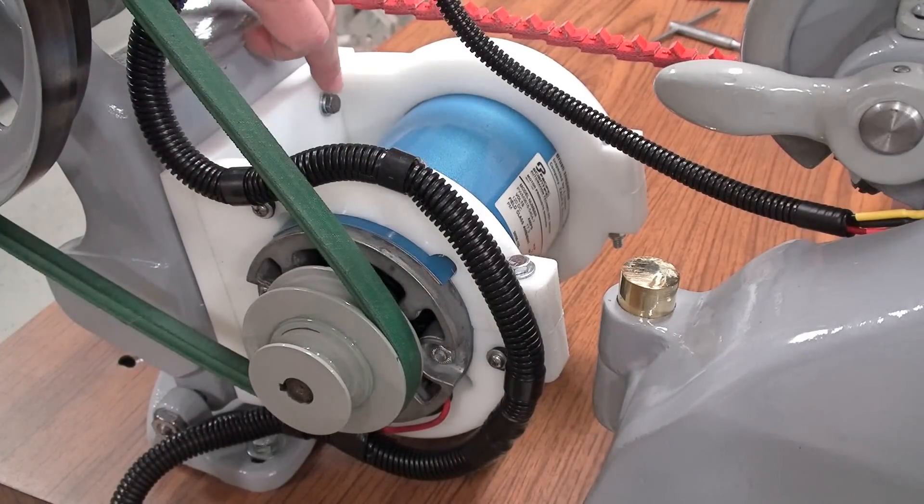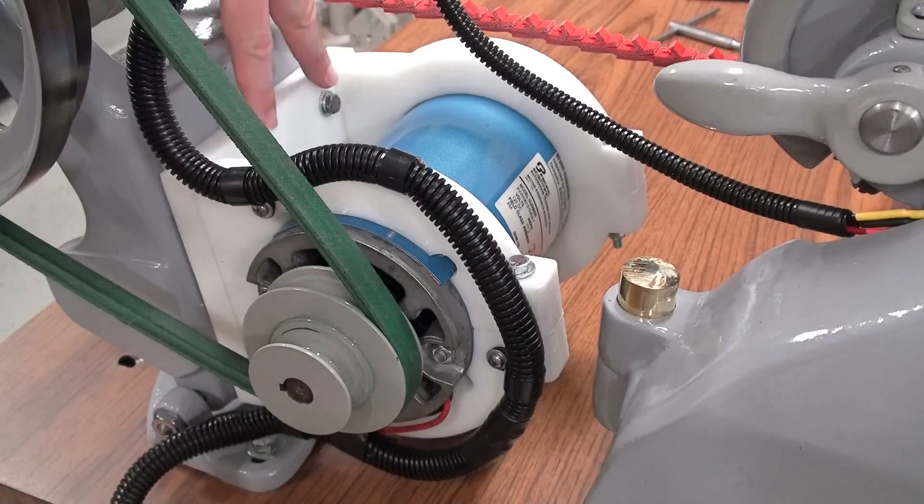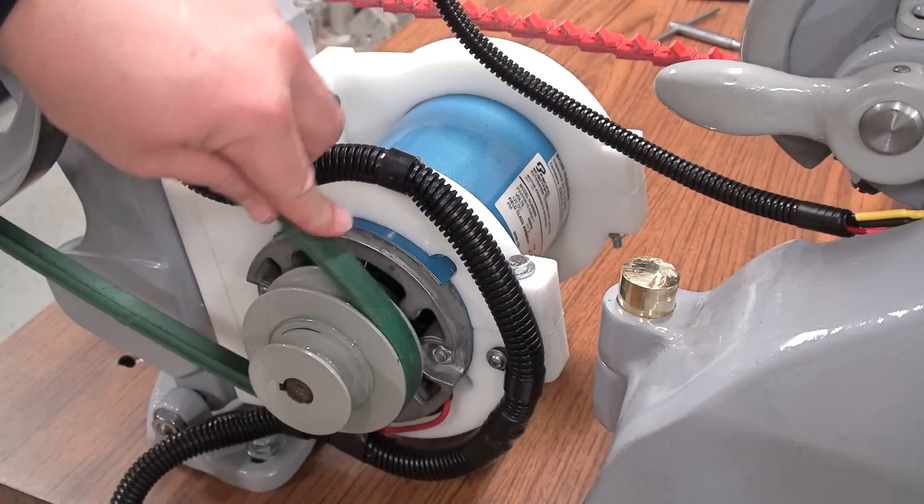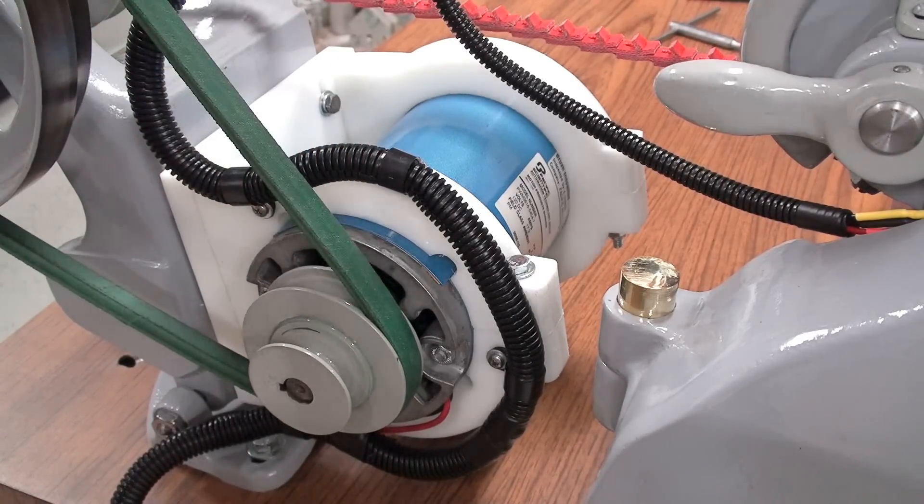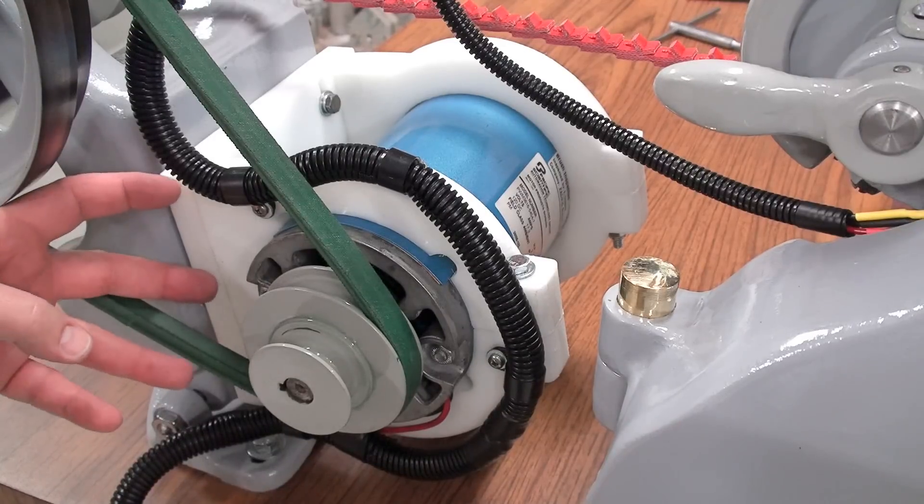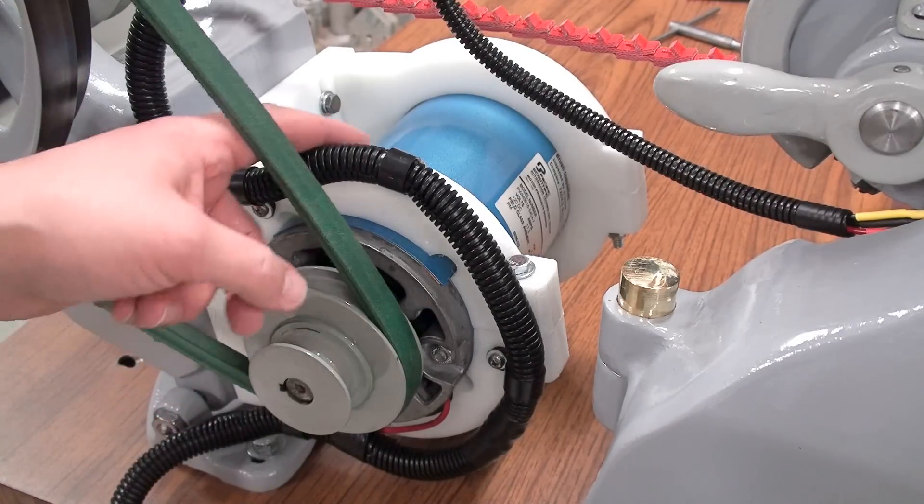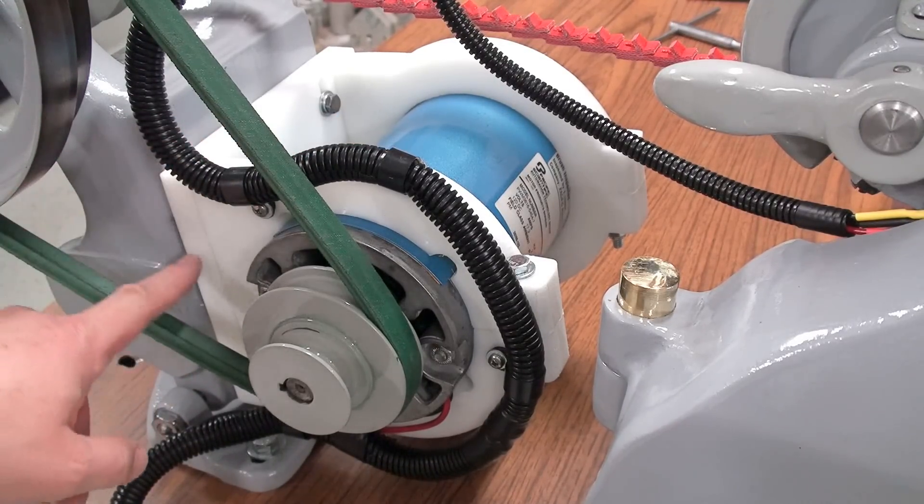I've got elongated holes back along here so that I can adjust the motor height according to how much tension I want for the belt. Then there are a couple bolts that come in here that connect these brackets with this faceplate.